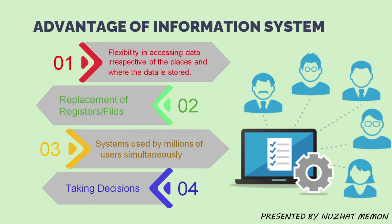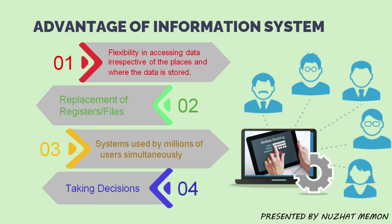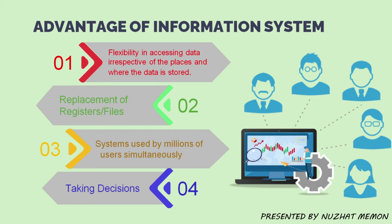The third advantage is that information systems are used by millions of users simultaneously. For example, search engines allow multiple users to access data at the same time. Other examples are reservation systems for booking travel or hotels, online banking for withdrawals, deposits, or any banking transaction, online tax filing, and stock trading where multiple users can buy or sell shares simultaneously.